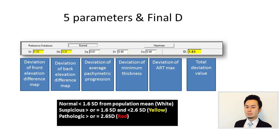Those values are represented in colors. If it is less than 1.6 standard deviations from the normal population, it will be white. If it is between 1.6 and 2.6 standard deviations, it will be yellow. And if it is more than 2.6 standard deviations, it is red, indicating a pathological finding.